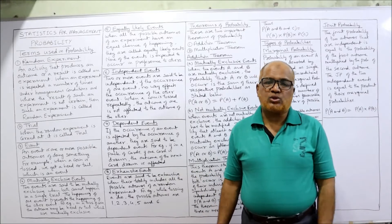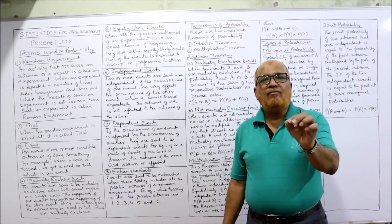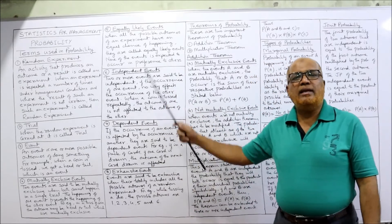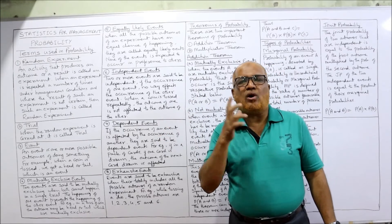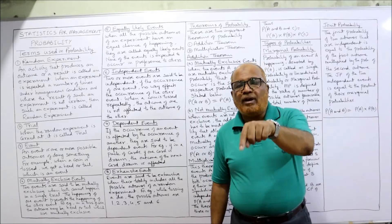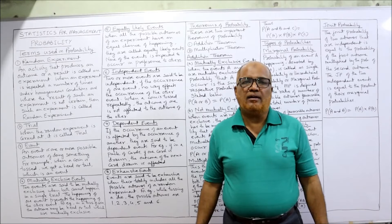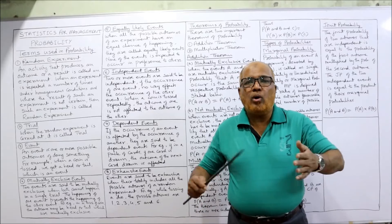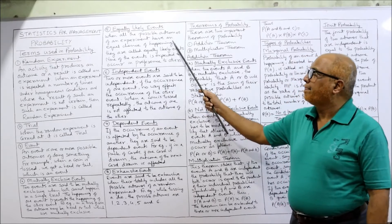Then equally likely events. When every outcome has an equal chance of happening, it is called equally likely. For example, when you throw a coin, the chance of head and the chance of tail are both equal — 1/2 is the probability of getting head and 1/2 is the probability of getting tail. Both events are equally likely; there is no preference that only one will occur. Both have equal chance of occurring.